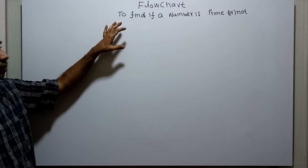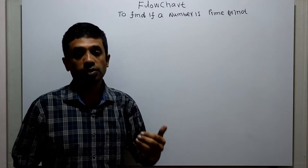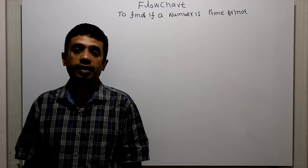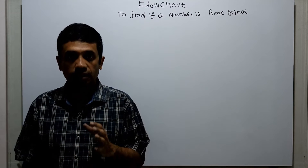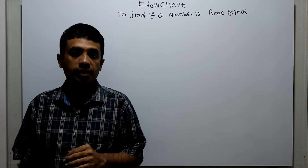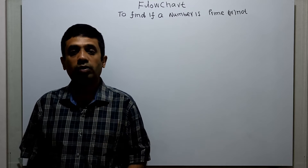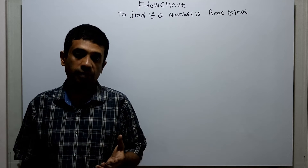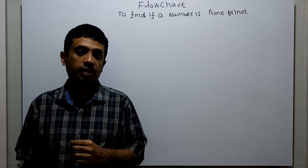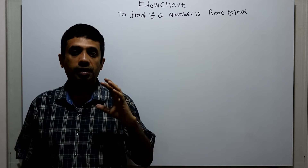Hello friends, we are going to draw a flowchart to find if a number is prime or not. A prime number is a number fully divisible by itself and one only. Fully divisible means the remainder should be zero when we divide a number by another number. Various prime numbers, for example, are three, seven, thirteen, seventeen, and so on.